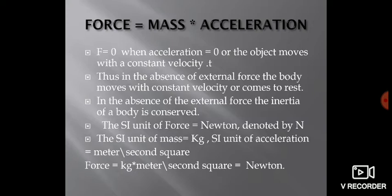Force equals mass into acceleration. When acceleration is zero, the product of both is zero, so net force is zero Newton. This means: in the absence of external force, the body moves with constant velocity or comes to rest. If there is no change in velocity, acceleration is zero. So when there is no external force, either the body moves with constant velocity or the body is at rest. In the absence of external force, the inertia of a body is conserved. SI unit of force is Newton, SI unit of mass is kg, SI unit of acceleration is meter per second square.